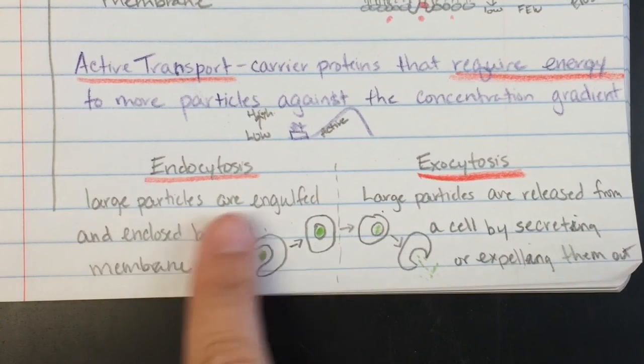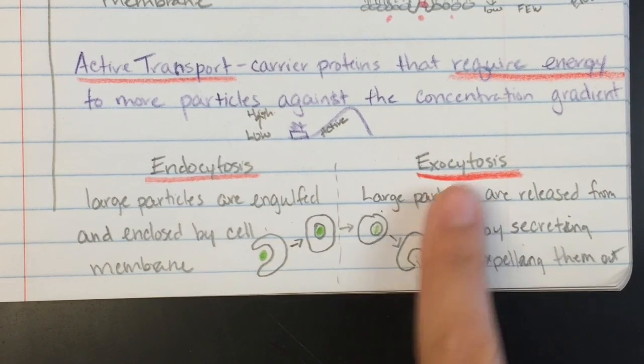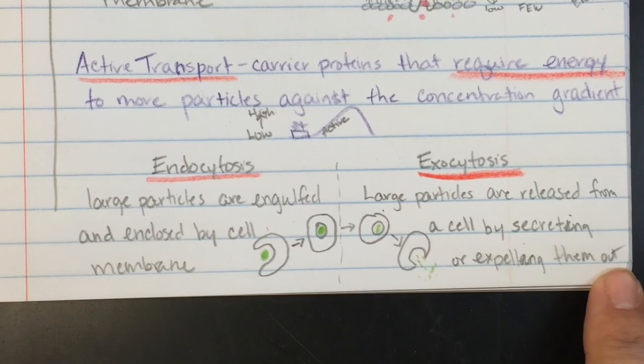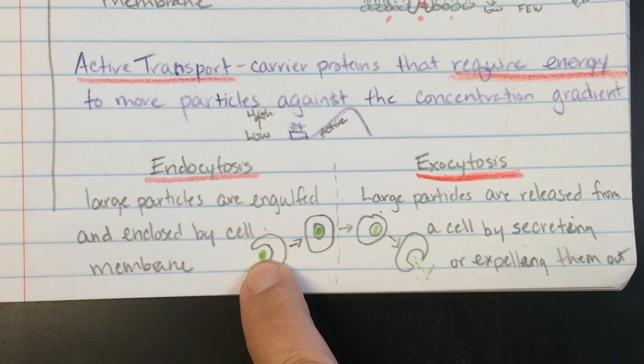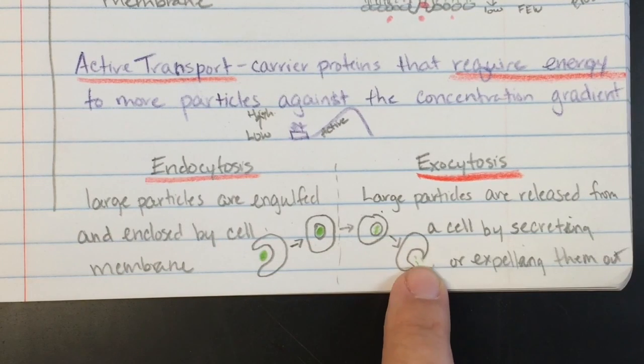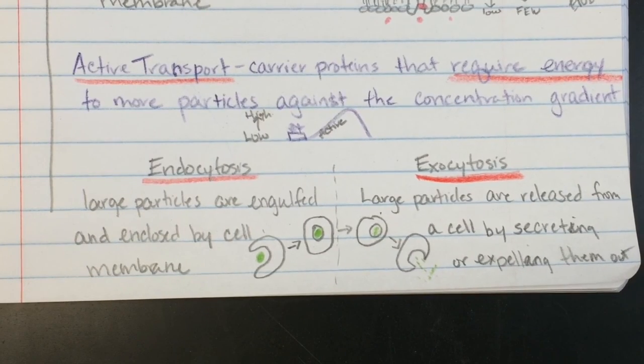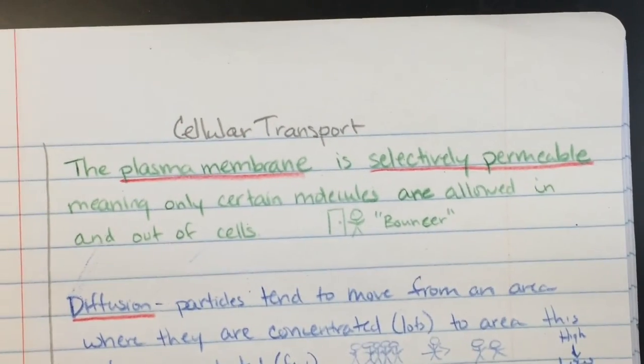And finally endocytosis, large particles are engulfed and enclosed by a cell membrane so the cell takes them in. And in exocytosis large particles are released from a cell by secreting or expelling them out. So in this case if we took in a little evil bacteria we brought them in, we merged them with a lysosome, destroyed them, and then spit out the particles to say we no longer need you. And that folks are your notes on cellular transport. Thanks.